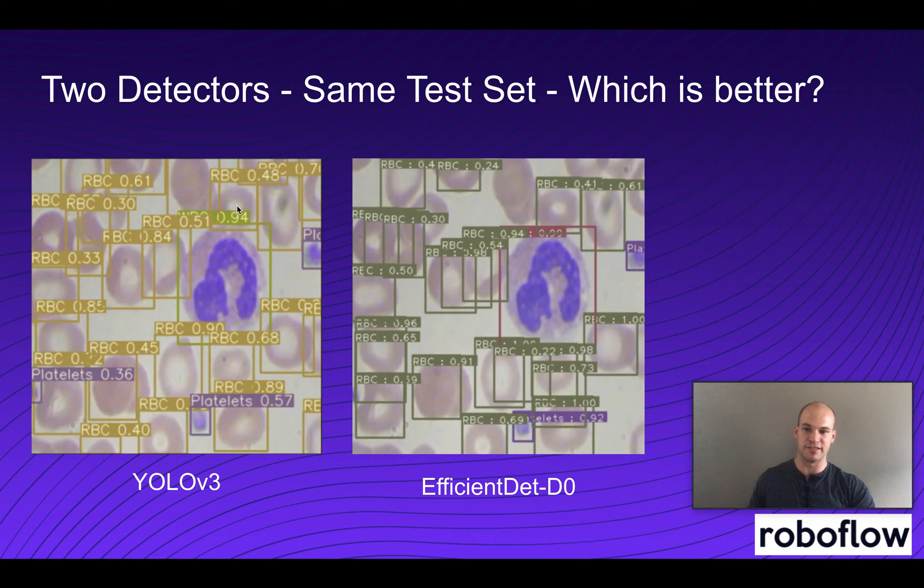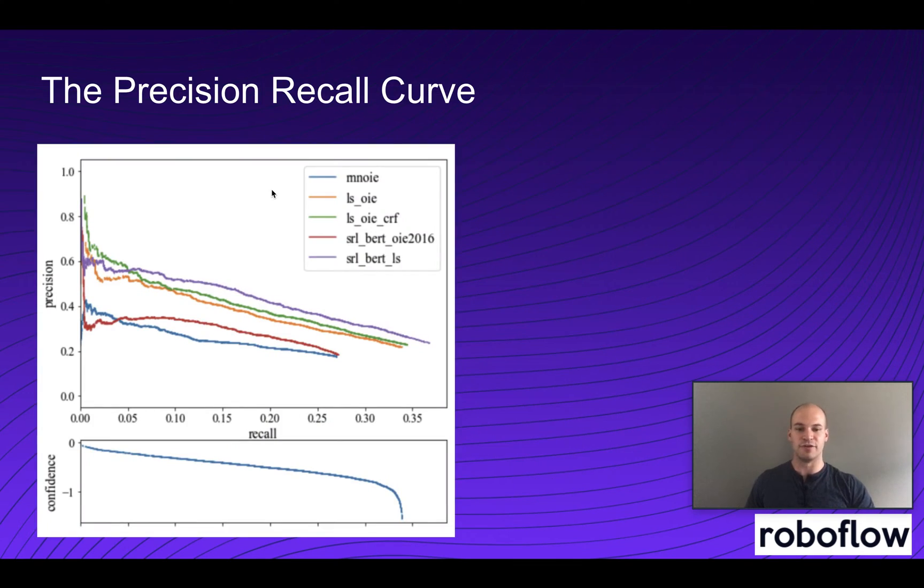So jumping back to those test images, we see that our model makes a bounding box prediction, a class prediction, and then it also assigns a confidence value to that prediction. Here we can see it's pretty sure about white blood cells at 0.94 confidence, but a little less sure about this red blood cell at only 0.48. So you can threshold the number of predictions you're making by adjusting a threshold on this confidence metric.